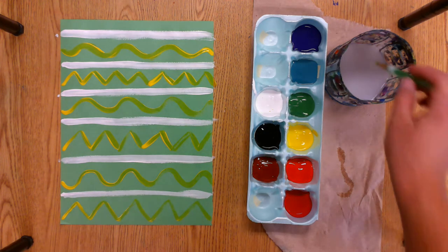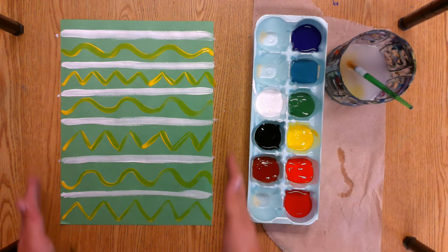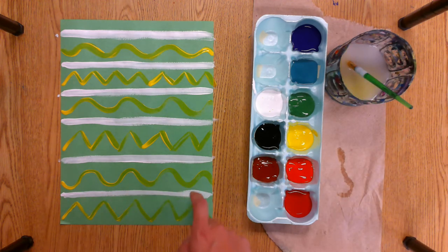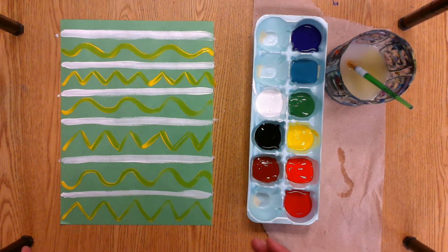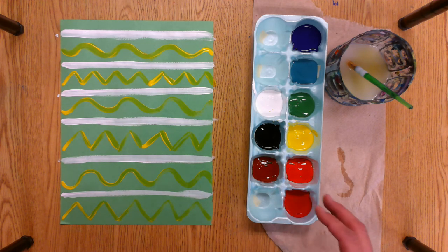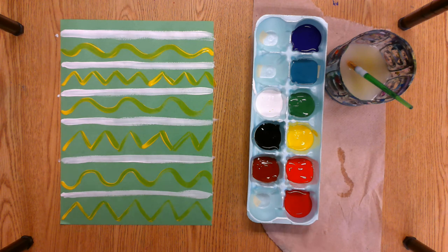And it's very important that your paper is up and down and then your lines are going horizontally. Because next time when you come back, we're going to turn our paper the opposite direction and paint them across on that paper. So it's going to be wide instead of tall.